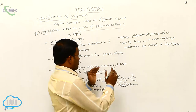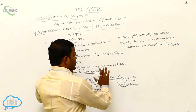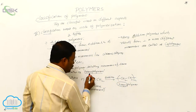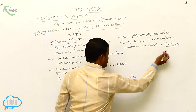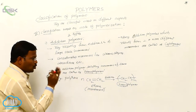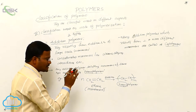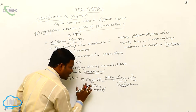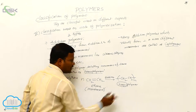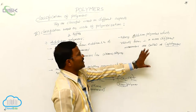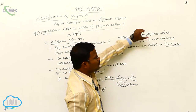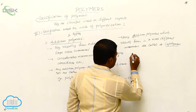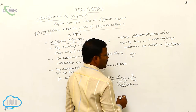Addition polymers can be classified into two types: homopolymers and copolymers. Homopolymers are those addition polymers resulting from the polymerization of only one type of monomer, whereas copolymers are those addition polymers which result from two or more different monomers together.